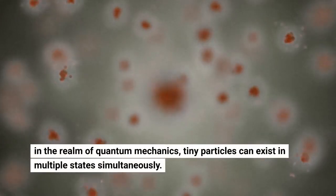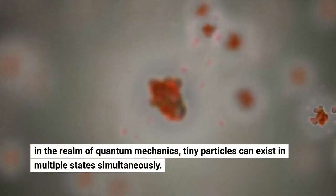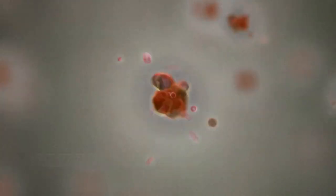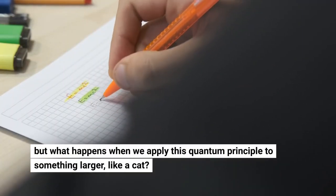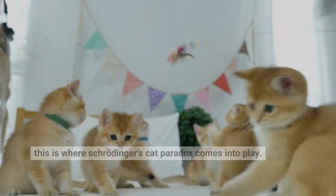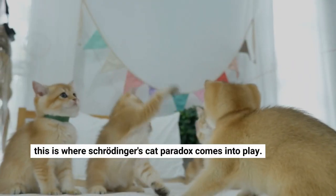In the realm of quantum mechanics, tiny particles can exist in multiple states simultaneously. But what happens when we apply this quantum principle to something larger, like a cat? This is where Schrödinger's cat paradox comes into play.